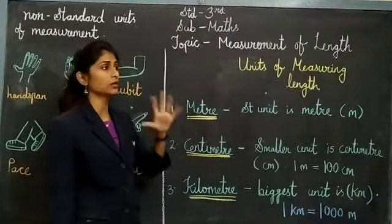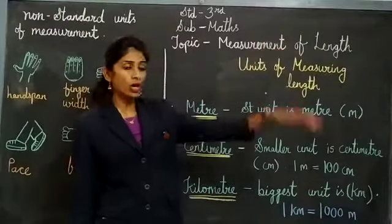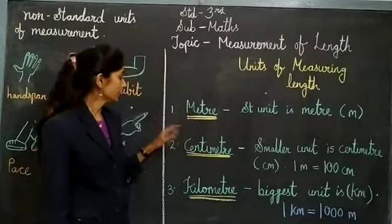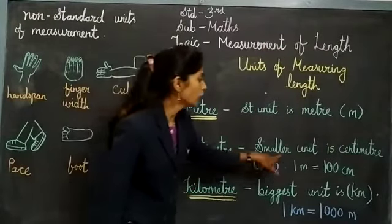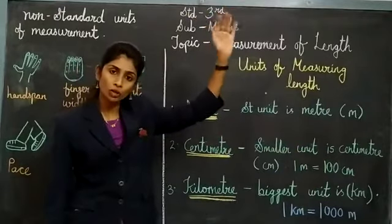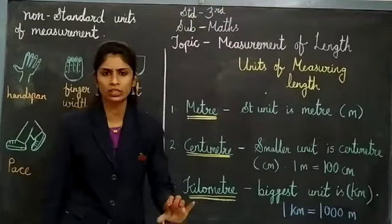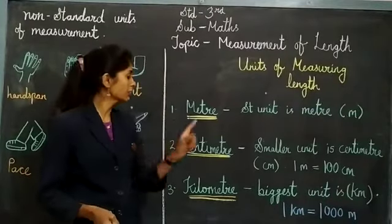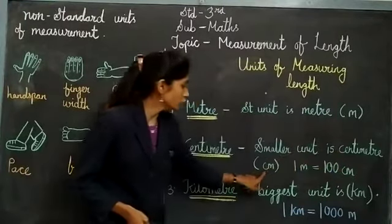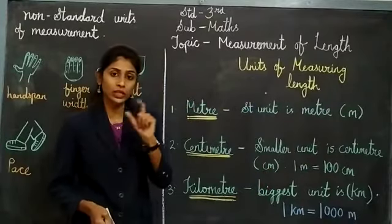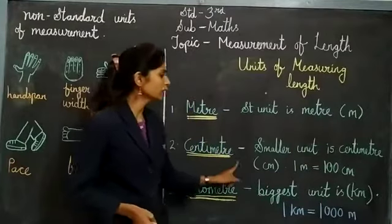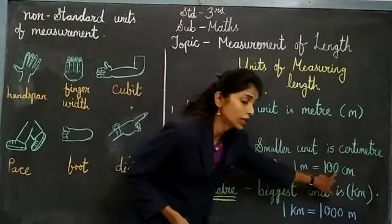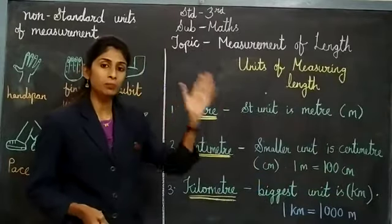Then next is centimeter. Centimeter is the smaller unit. Meter is for long objects and centimeter is for small things. Suppose I want to measure how long your textbook is or how long your compass is — I will measure that in centimeter. We denote centimeter as small 'cm'. On your scale or ruler, you can see centimeter is given. Here you have to remember: one meter is equal to 100 centimeters. That is why meter is always bigger than centimeter.